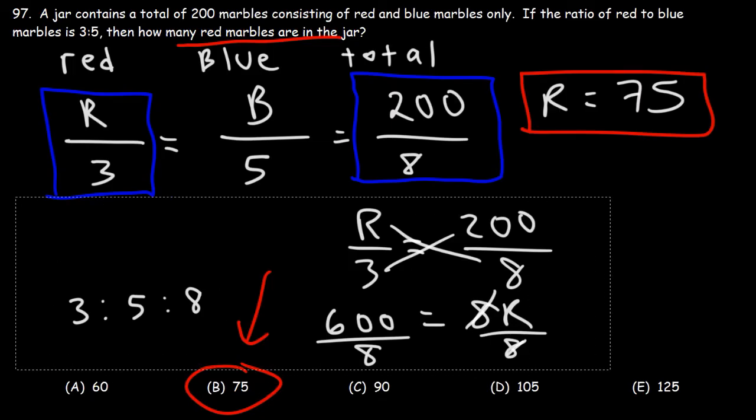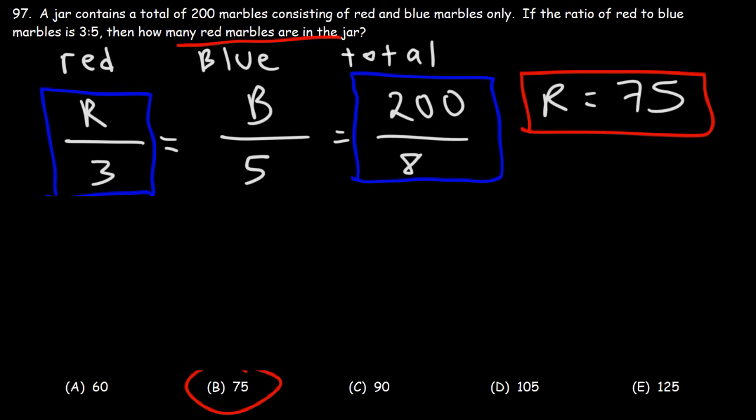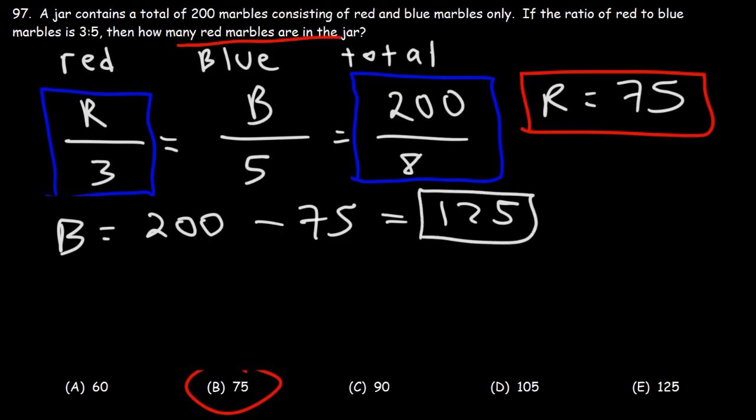Now, if we wanted to calculate the number of blue marbles, here's what we can do. The number of blue marbles is going to be 200, which is the total, minus the number of red marbles. So 200 minus 75 is 125. Now, of course, you can also set those two fractions equal to each other.